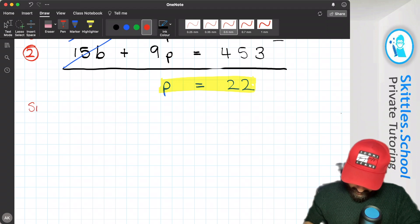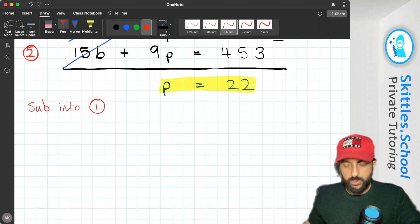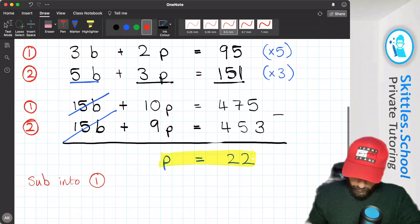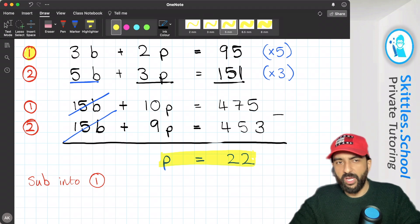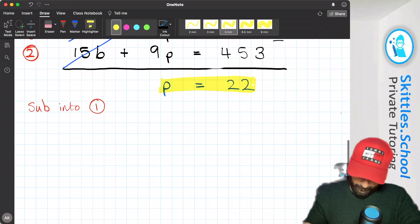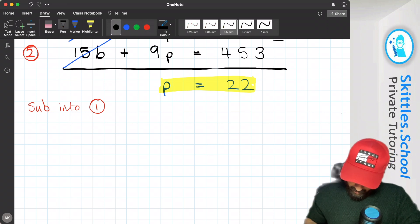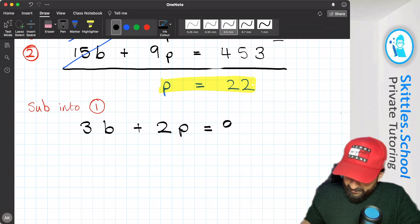We're going to sub into equation 1. So equation 1, this one here, 3b, 3 bananas plus 2 pears equals 95. 3 bananas plus 2 pears equals 95.